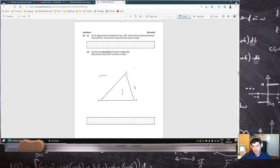Then move the compass to the other side and make an arc there and there, and that's the perpendicular bisector.